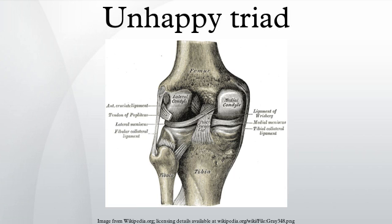The classic Adenogat triad is characterized by an injury to three knee structures: the anterior cruciate ligament, the medial collateral ligament, and the medial meniscus. The unhappy triad occurs due to a lateral blow to the knee causing a rupture in the anterior cruciate ligament, medial collateral ligament, and meniscus.